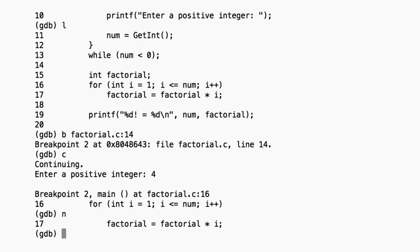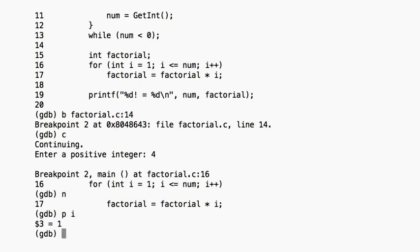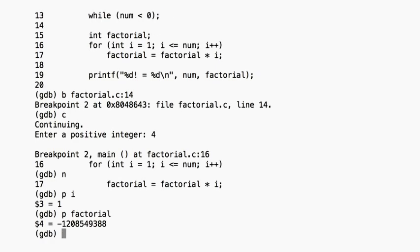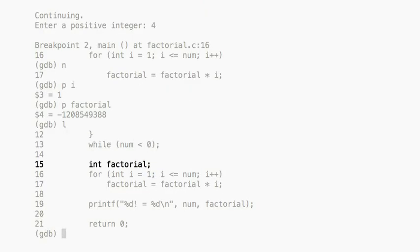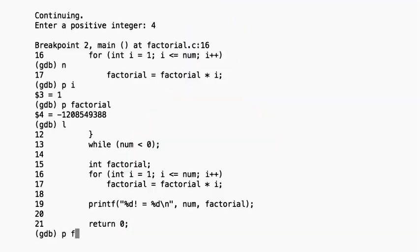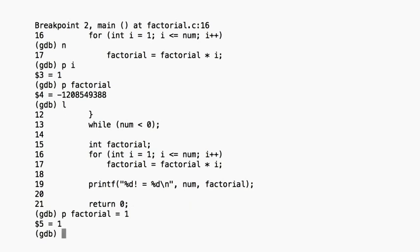Here we are at the for loop. Let's go one more line into the for loop and then start printing variables to see what's going on. Let's make sure that i is indeed 1 as expected — yep, that's all good. What about factorial? Whoa, that's no good — we've got a big negative number here. If we look back at the code, we see that we never initialized it, so we've just got trash in there. That'll definitely throw off our calculation. Fortunately, we don't have to leave GDB to fix this. We can initialize it right here using the print command — we'll initialize it to 1, since the factorials of 0 and 1 are both 1. If we initialized it to 0, we'd always end up with 0 as our result. You can set any variable this way, which is super handy.